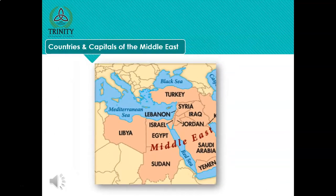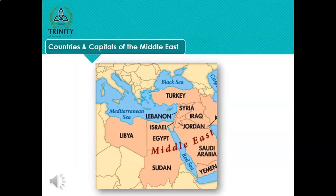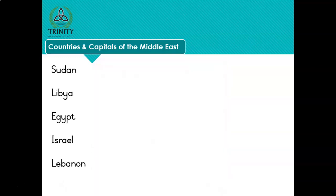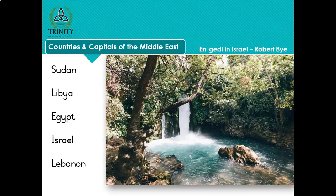In today's video we're going to look at Libya, Sudan and Egypt - we already know those - and then Lebanon, Syria, Turkey, Iraq and Jordan. Sudan - Khartoum. Libya - Tripoli. Egypt - Cairo. Israel - Jerusalem. Lebanon - Beirut. And here's a beautiful photo of En Gedi in Israel, right near the Dead Sea. It's in the wilderness area, which makes it all the more astonishing and beautiful to find this oasis there.